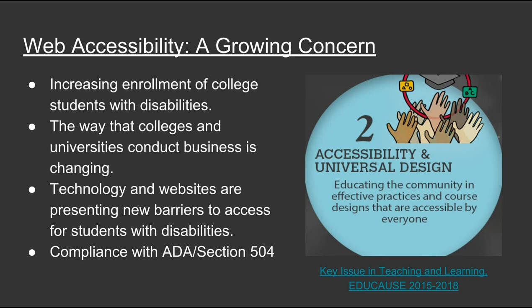Although the language of the ADA does not explicitly mention the Internet, the Department has taken the position that Title III covers access to websites of public accommodations. Several states' systems of higher education and individual campuses have made web accessibility a priority. Although it's not explicitly mentioned in the ADA, states have adopted some technical standards. New York State is behind other states in web accessibility efforts. There is a New York State information technology policy that addresses accessibility of websites, but this only applies to state entities like SUNY and CUNY, leaving others to devise their own policies.